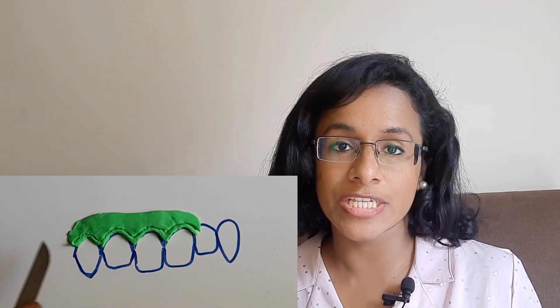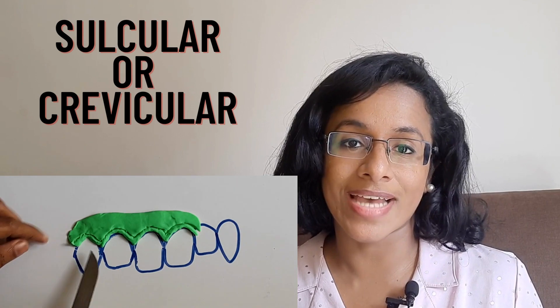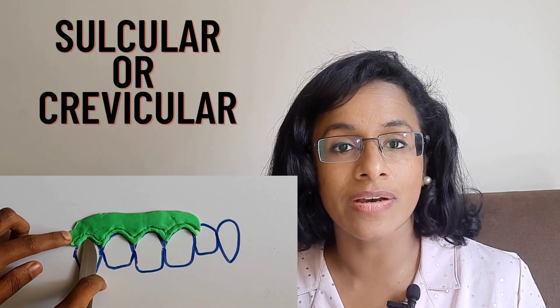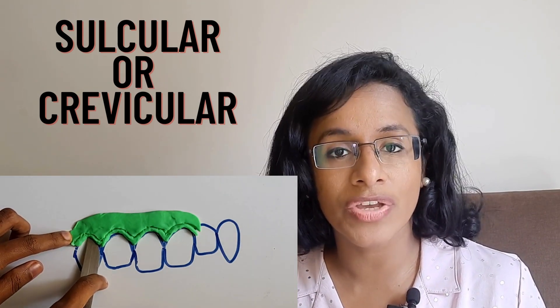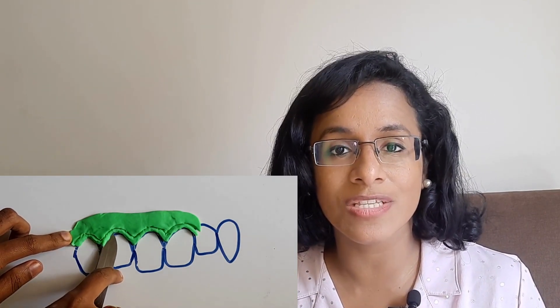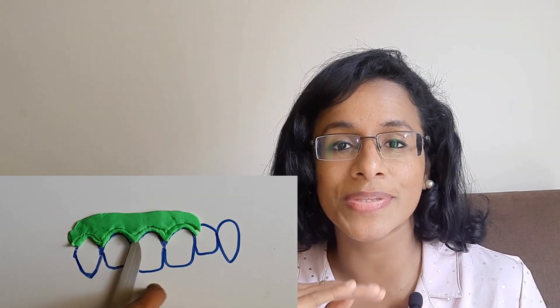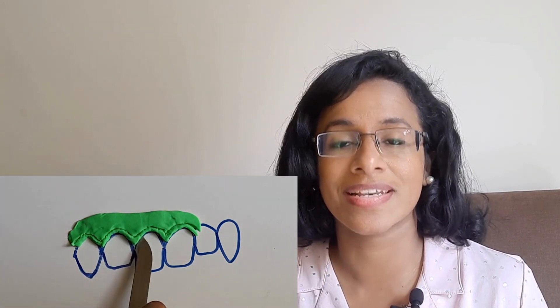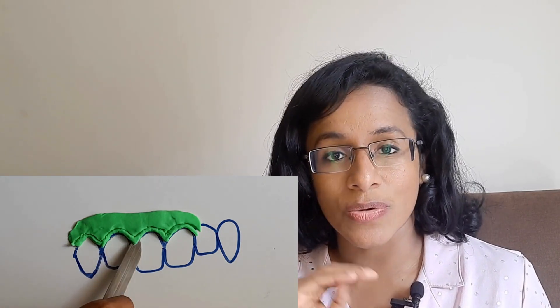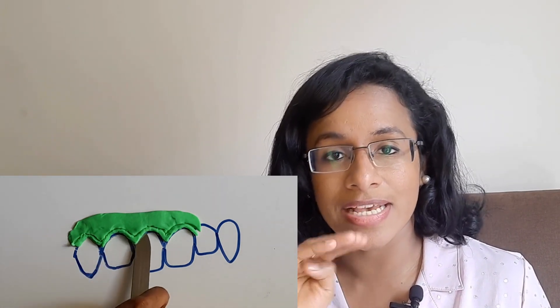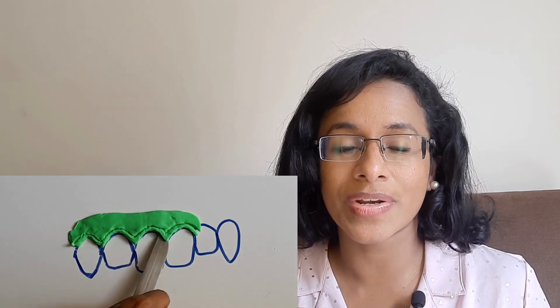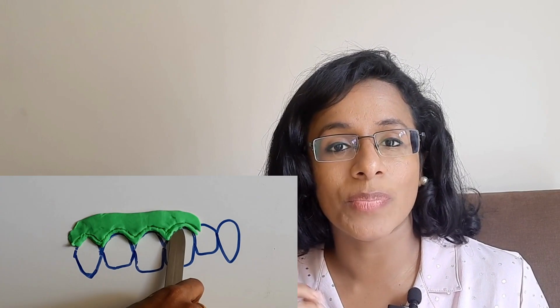The second incision is called the crevicular incision. The blade passes through the sulcus of all the teeth and again has to reach all the way to the bone. The blade used is 12 or 12D.